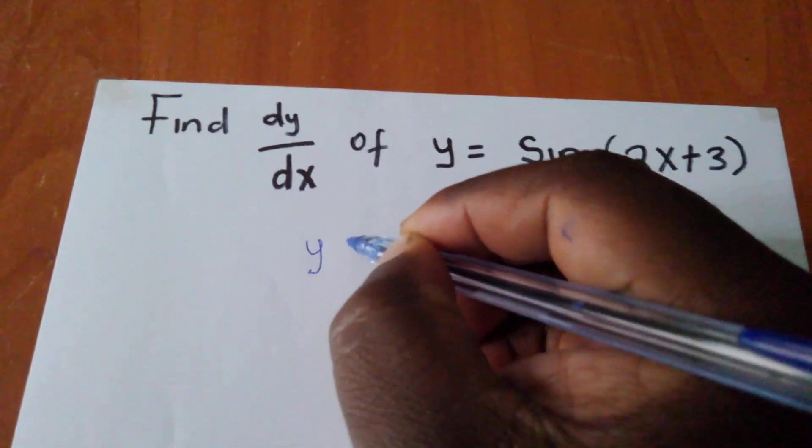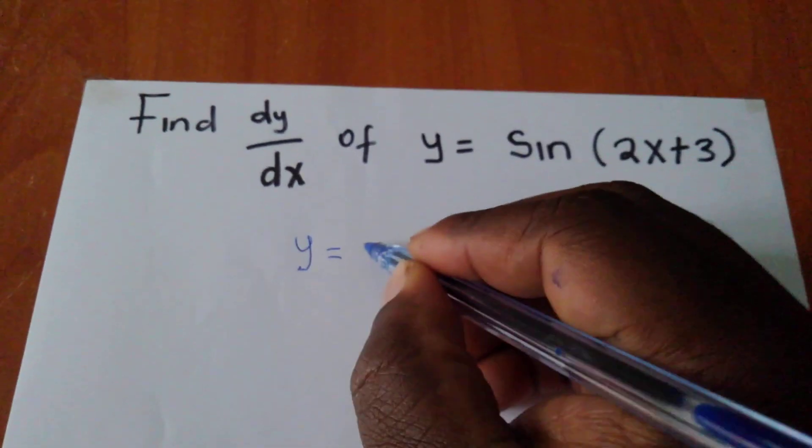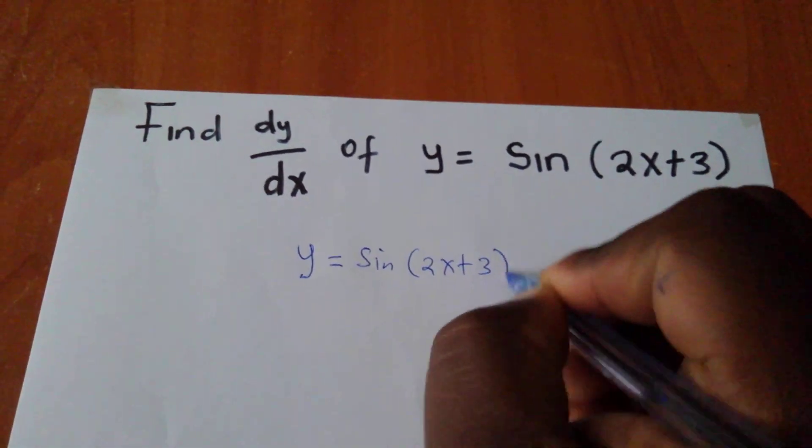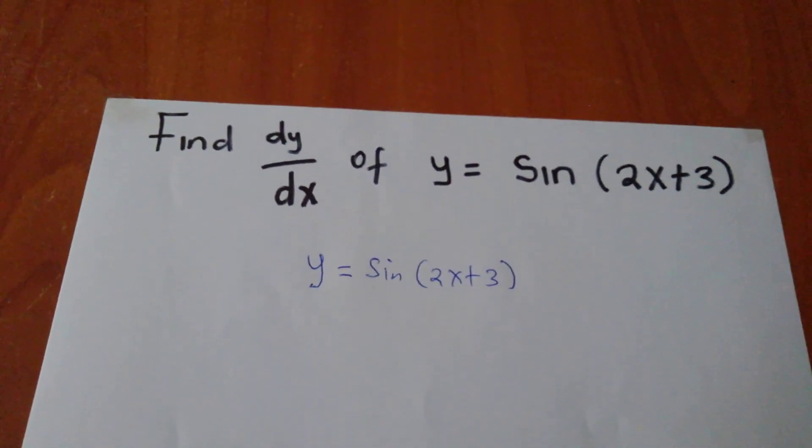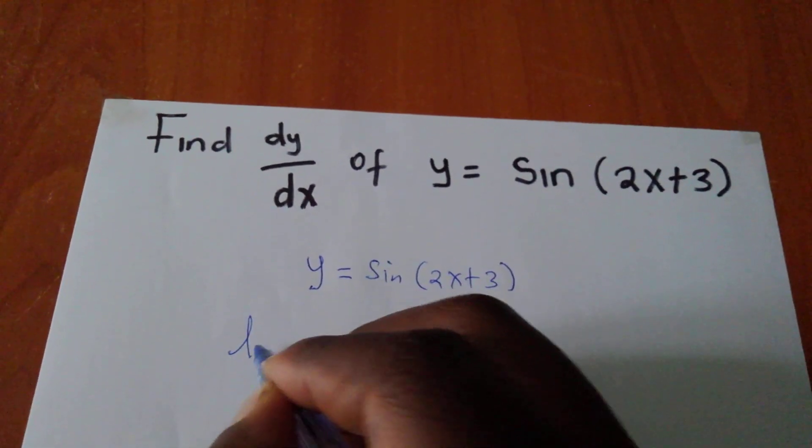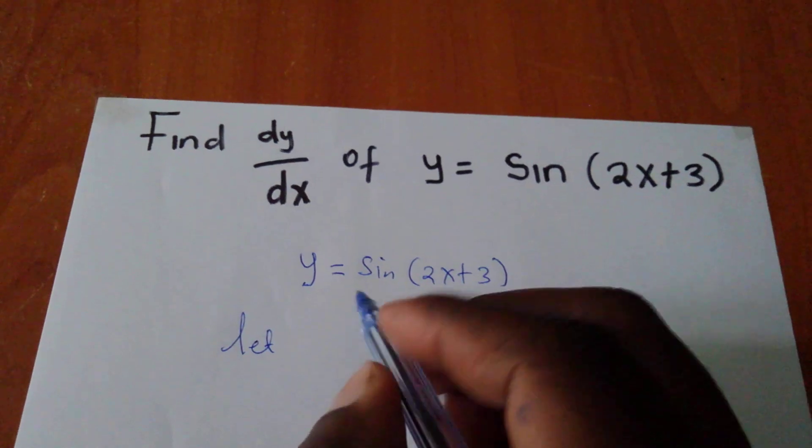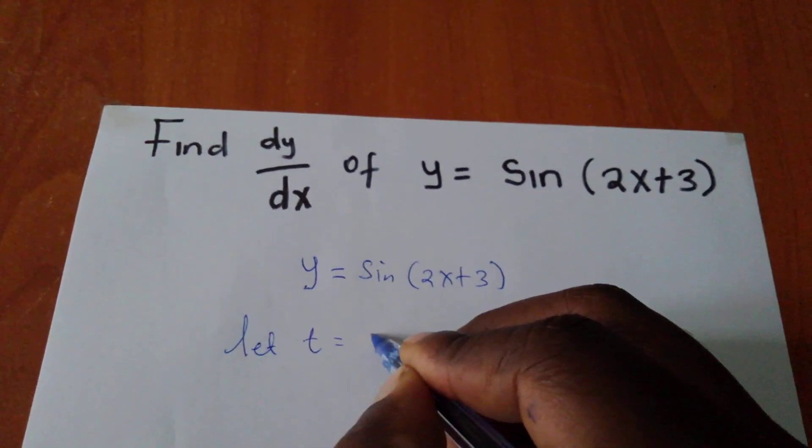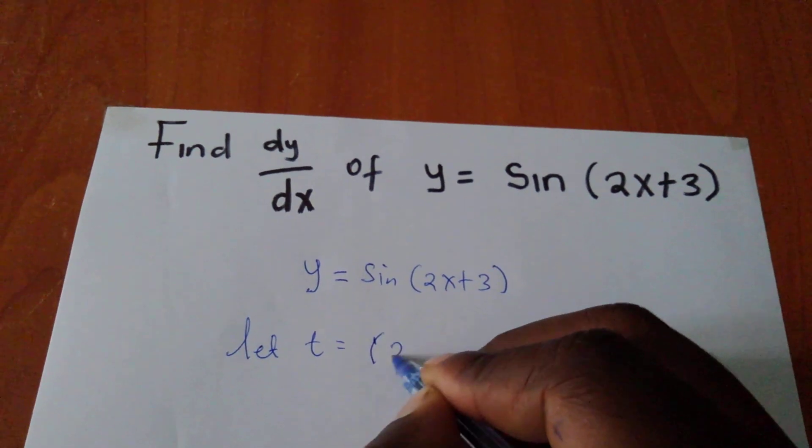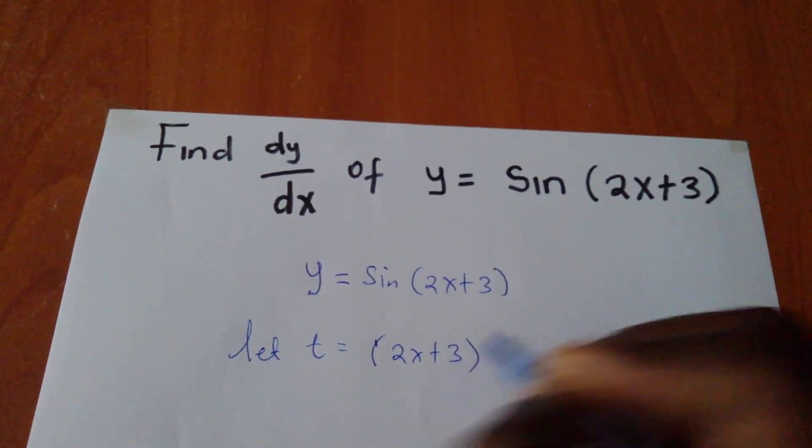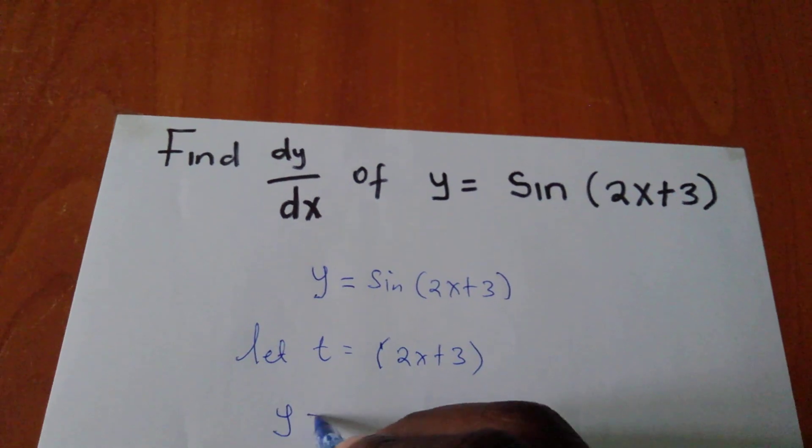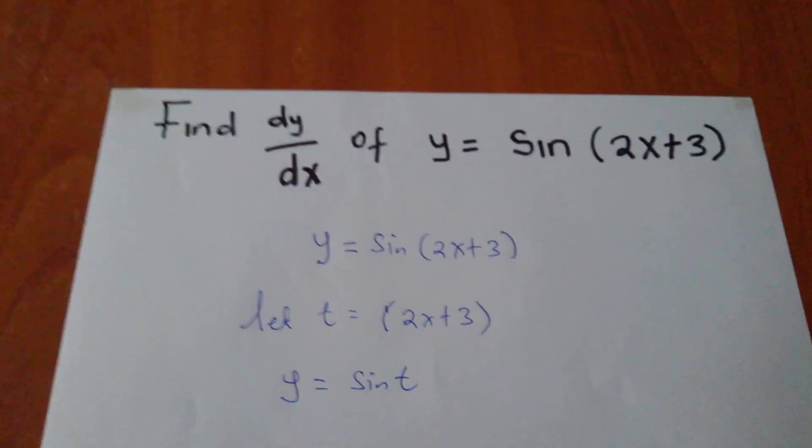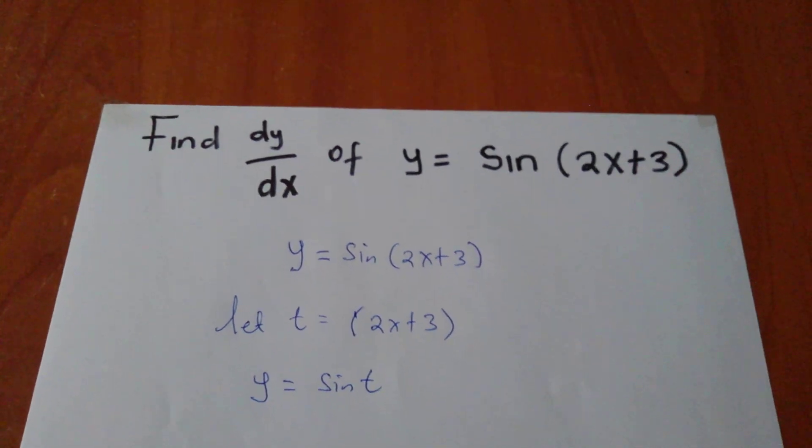If I have my y equaling to sine of 2x plus 3, first of all I will let t equal to 2x plus 3, and therefore my y will be sine t.